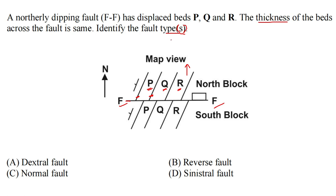There is an 'S' in the brackets, which means this is an MSQ question — that means more than one answer can be correct. So we have to find out which types of fault could have produced this pattern. More than one fault can have produced the same pattern, and maybe a combination of those two, but according to the options we have to find out.